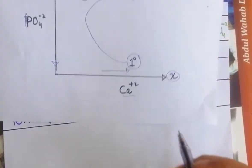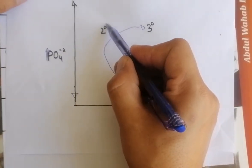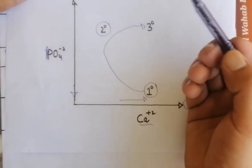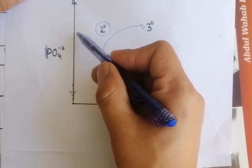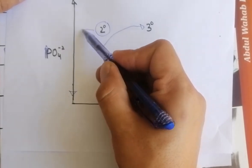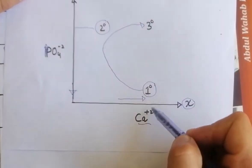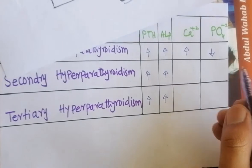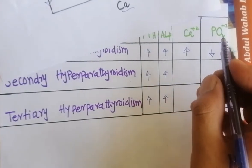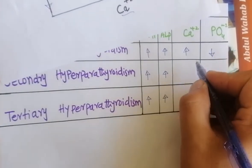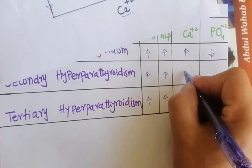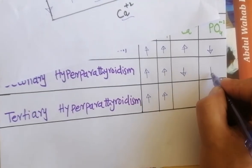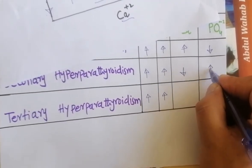Similarly, in second degree or secondary hyperparathyroidism, phosphate level is increased while calcium level is decreased. So in secondary hyperparathyroidism, calcium is low and phosphate is high.